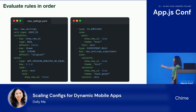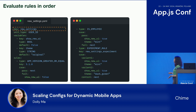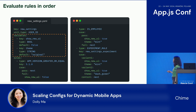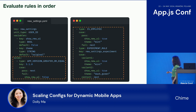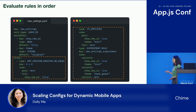Let's take a look at our YAML file. Here's new_settings.yaml. We have the key of the config, the unit type, the variables — which is the list of all the variables, each with a key, type of the variable, and the default value. And then we have a giant rules section, which we'll go through with examples to explain how it works.